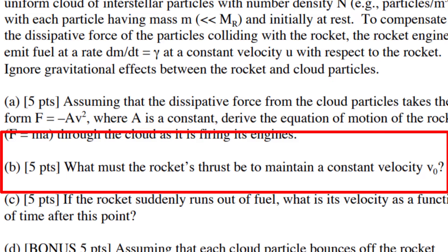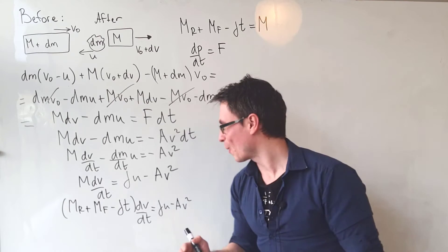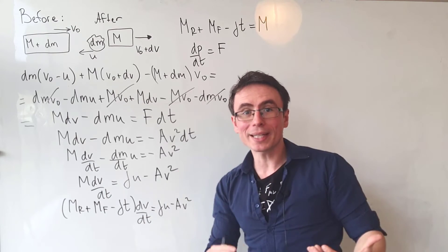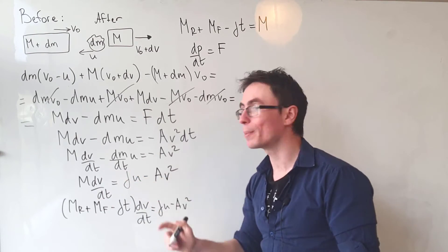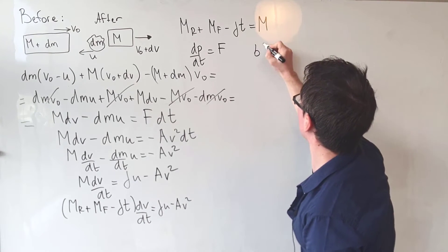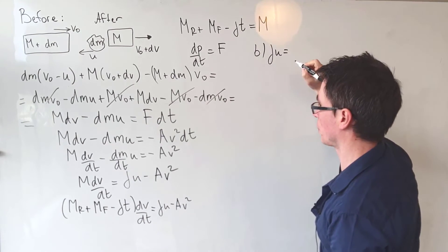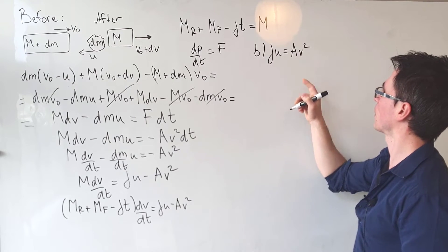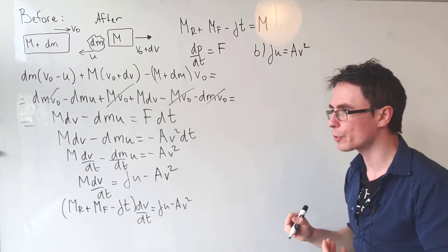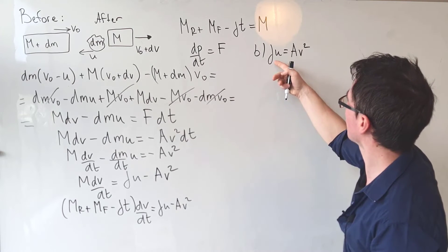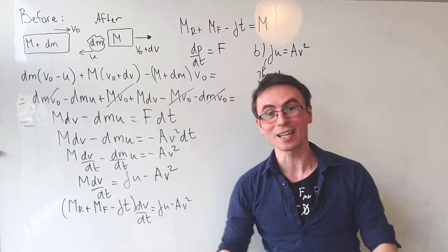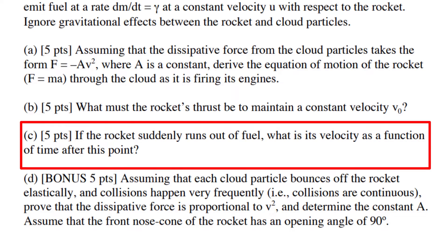Part B: what must the rocket's thrust be to maintain a constant velocity v₀? For constant velocity, the acceleration must be zero. The only way this works is if those two terms are equal and opposite, so γu = av². Therefore dm/dt = av²/u. Since γu has units of force — because γ is dm/dt — this expression, γu = av², is our thrust.